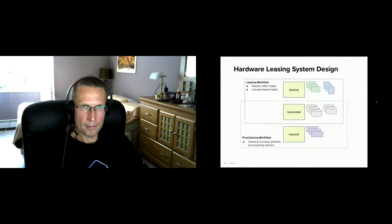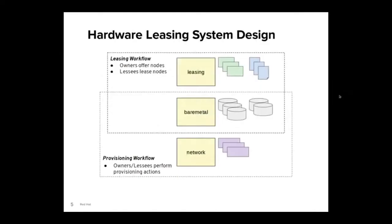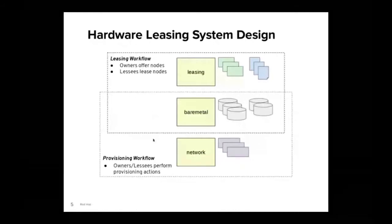At a high level, this is what the hardware leasing system service architecture looks like. In the middle of it all is a bare metal service where we keep our inventory of nodes. A leasing workflow allows owners to offer up their nodes while lessees lease nodes. Then a provisioning workflow allows both owners and lessees to perform provisioning actions — they can provision their nodes or configure node networking.